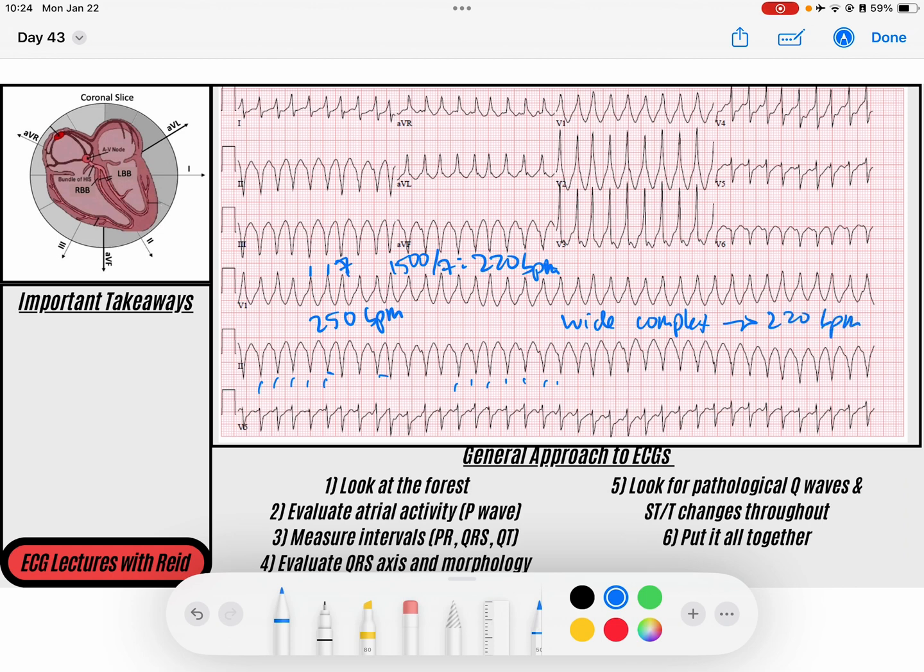We have a wide complex tachycardia at 220 beats per minute. So what's on the differential on this type of tachycardia? We've got ventricular tachycardia. We've got SVT with aberrancy. So let's try to figure out what is this. And so what we want to do is we want to exclude, is this ventricular tachycardia?